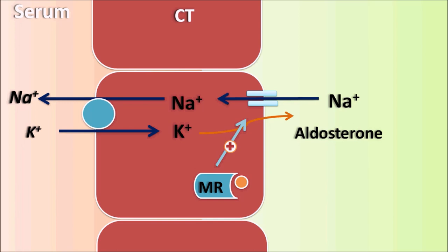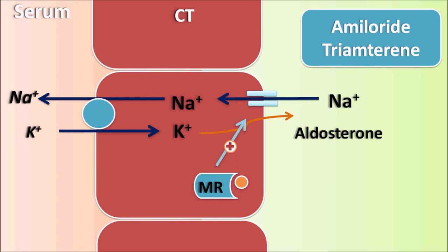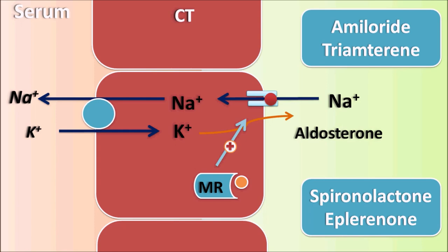Potassium-sparing diuretics act at the collecting tubules in two ways. Drugs like amiloride and triamterene act as sodium channel blockers, directly blocking the sodium channels so sodium is not reabsorbed. On the other hand, drugs like spironolactone and eplerenone act as antagonists of aldosterone receptors, inhibiting binding of aldosterone to mineralocorticoid receptors, thereby decreasing expression of sodium channels and inhibiting sodium reabsorption.